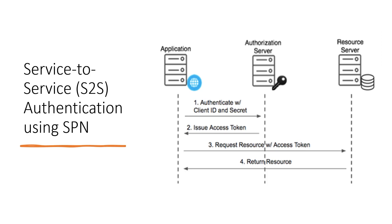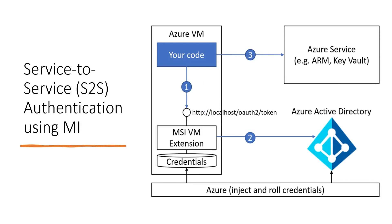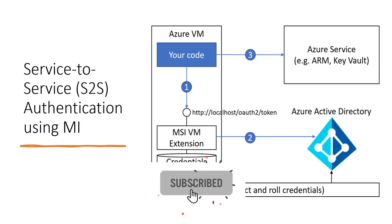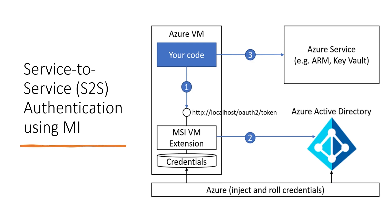With managed identity, from wherever your code is deployed — whether App Services, Function Apps, VMs, or other resources — you just enable the identity feature and use the appropriate code. When the code is called, the resource itself generates a token for you by injecting all the required details into that call, and you can then communicate with services like Key Vault, Cosmos DB, and others. Token rollover and rotation are managed by Azure itself, which is why managed identity is much more secure than service principals.